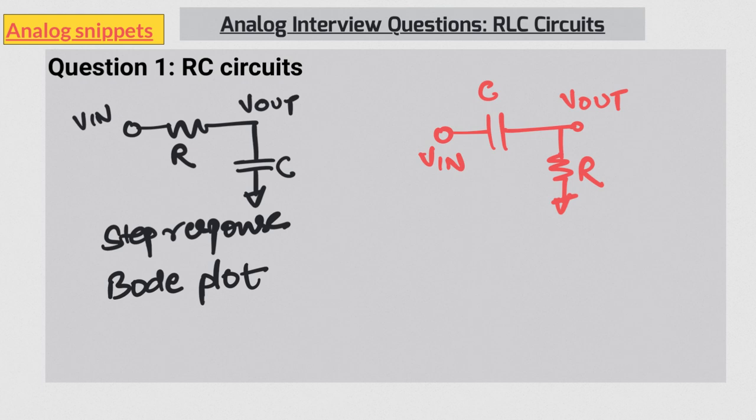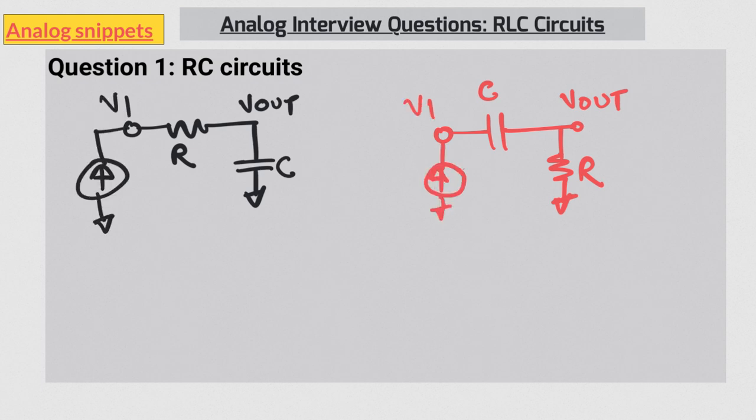Some people resort to writing equations and then they can make head and tail of this question. Okay my next variety on the same circuit. Replace input voltage source by input current source. Assume that capacitor is discharged initially and then plot the step response of Vout and V1.